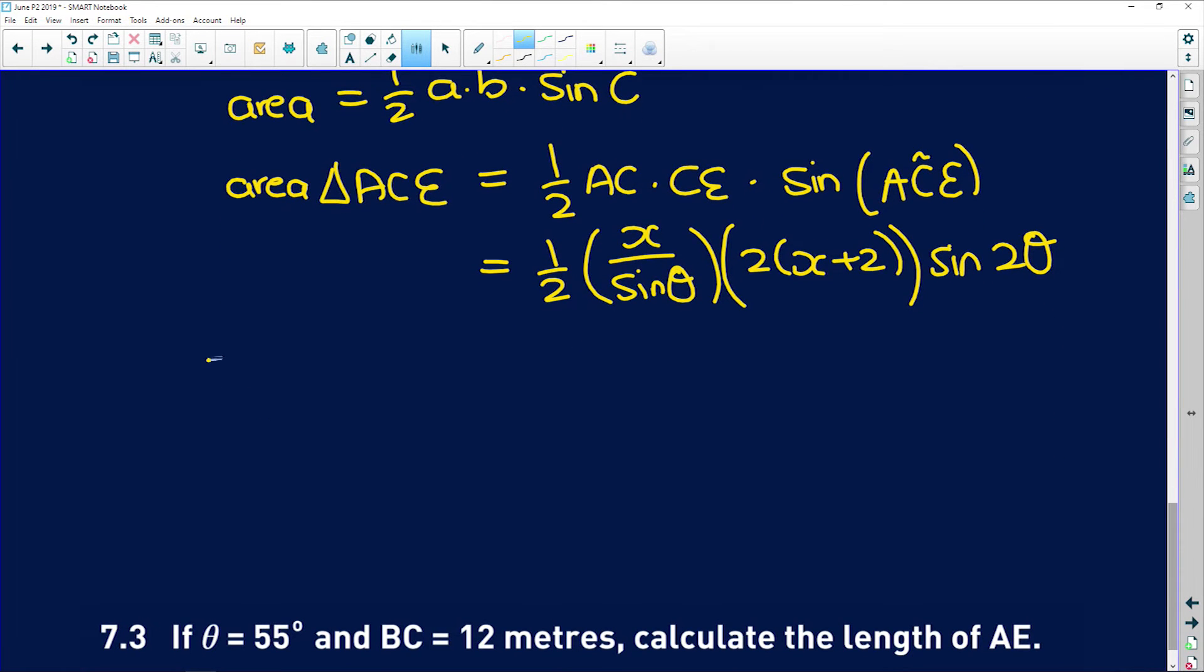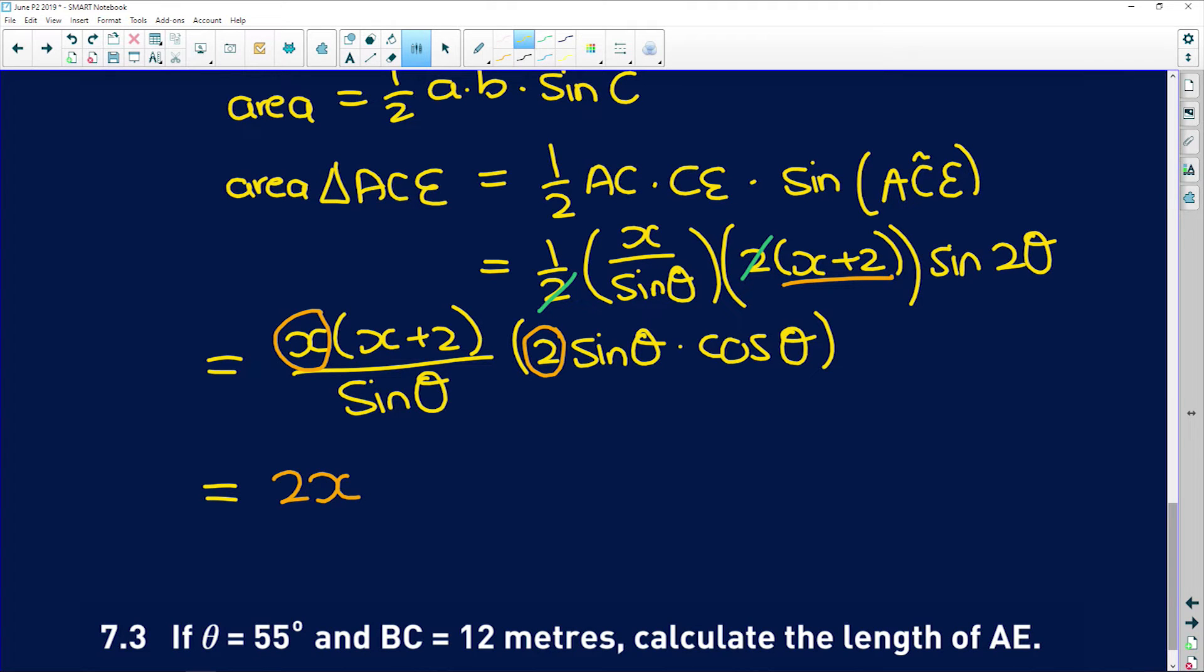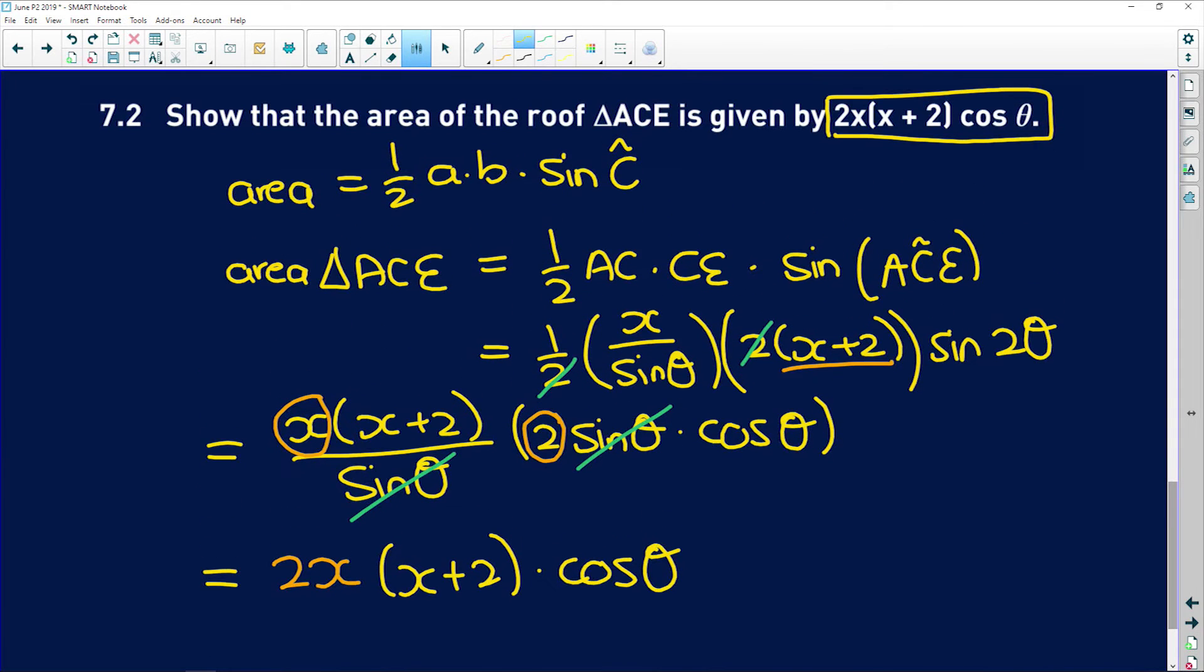So now we need to keep on expanding. I can already see that this 2 is going to divide into that 2 to give me 1, so we can get rid of that already. So now we have x into x plus 2 from this expression over here, over sine of θ. So that deals with the first two terms. But remember, sine of 2θ is 2 sine θ cos θ. So now if we keep going, we can see that if I put the coefficients at the front, I've got a 2 there and an x, so we're going to get 2x into x plus 2. And now, if I look here, sine θ will divide into sine θ to give me 1, so I'm left with cos of θ. And that's pretty sure here: 2x into x plus 2 multiplied by cos of θ, which is exactly what we found.